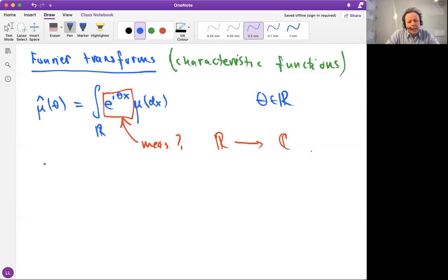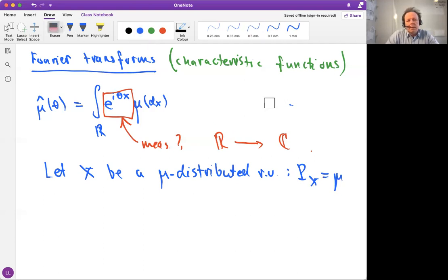So can we well define an integral for a complex number? Well, let X be any mu distributed random variable. That means that the law of X is equal to mu. So in that case, actually, we recognize that what is going there. Let's write here that if X is this type of random variable, so what is this then? It's just the expectation of e to the i theta big X.